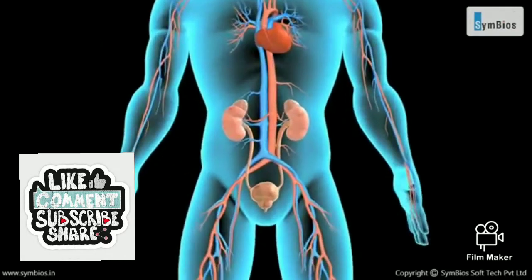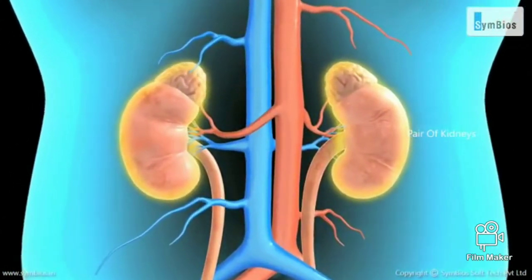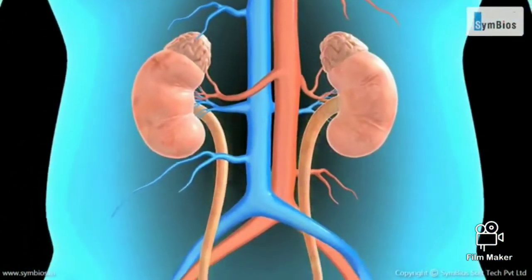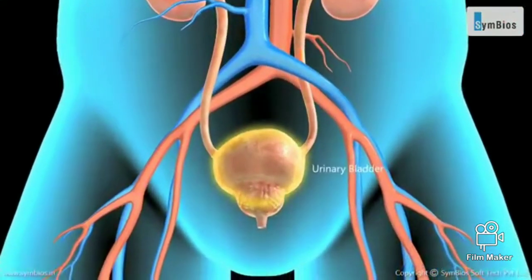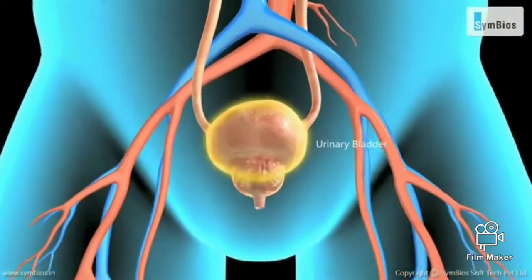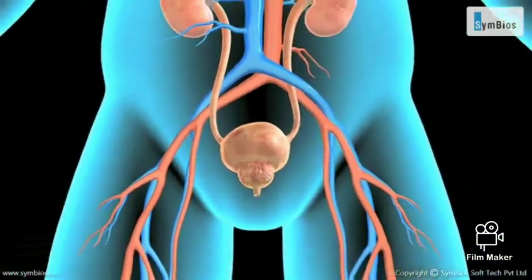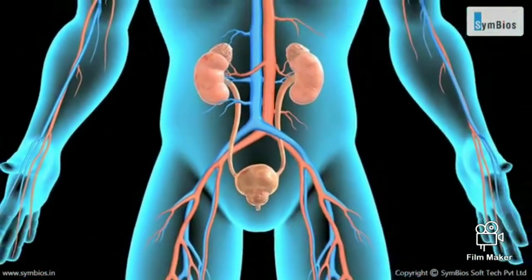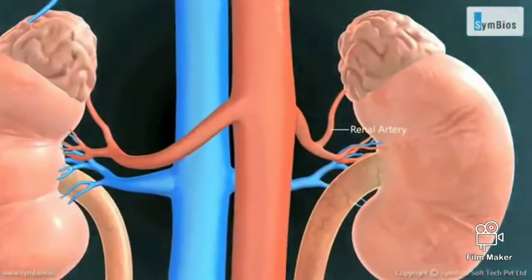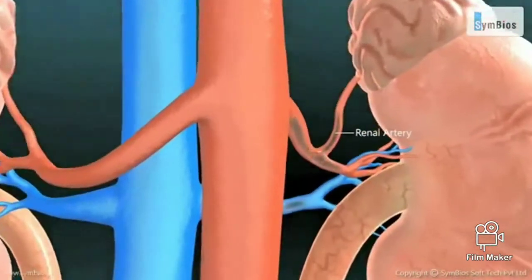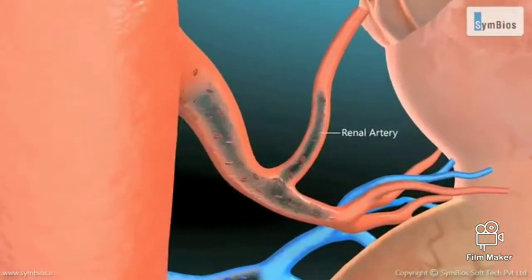The excretory system of human beings includes a pair of kidneys, a pair of ureters, a urinary bladder, and a urethra. Kidneys are the main organs responsible for the filtration of blood. The renal artery brings blood to the kidney for filtration.